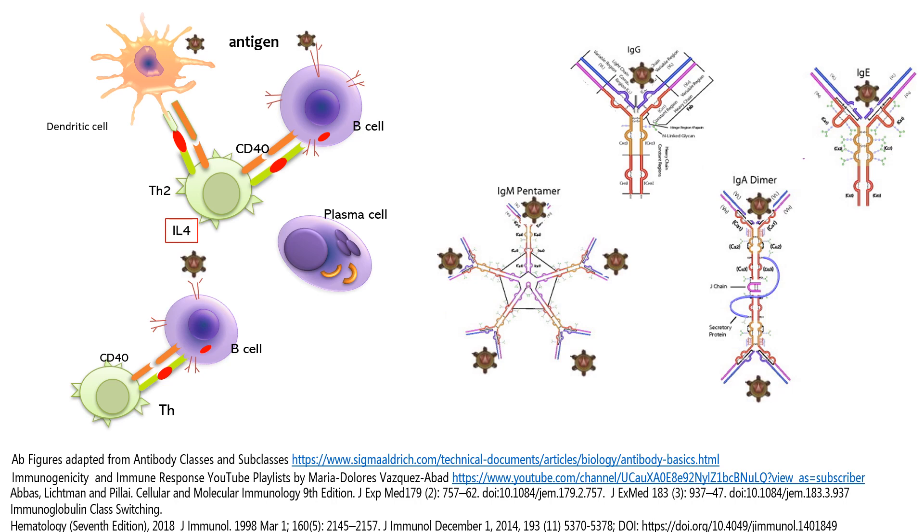Depending on the antigen and depending on that T cell epitope, the T cell will drive a different isotype, generally starting with IgM.